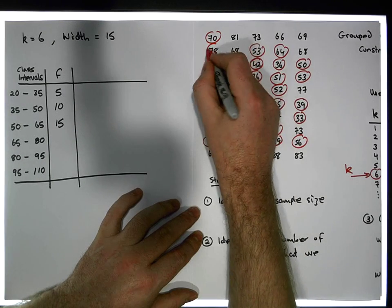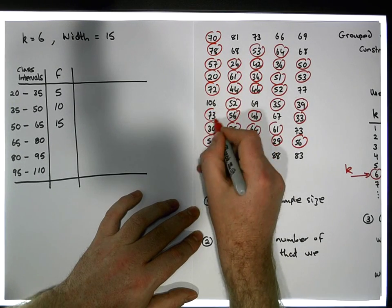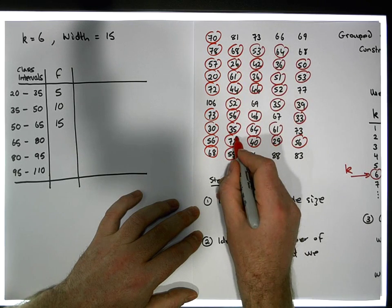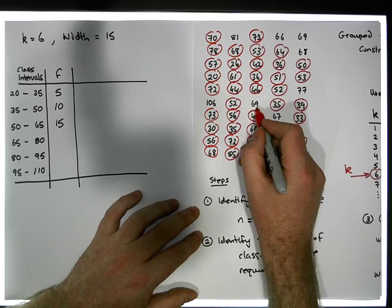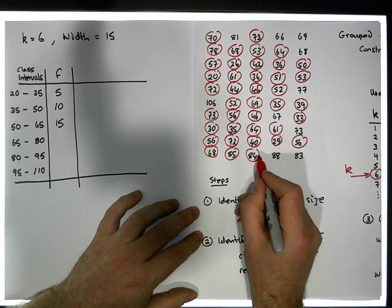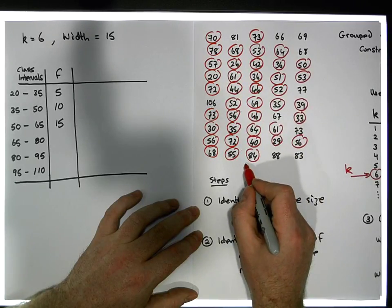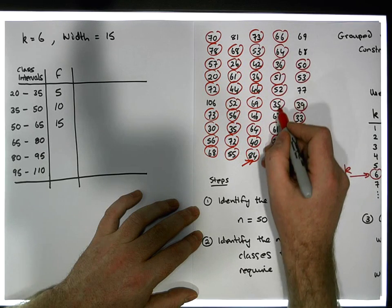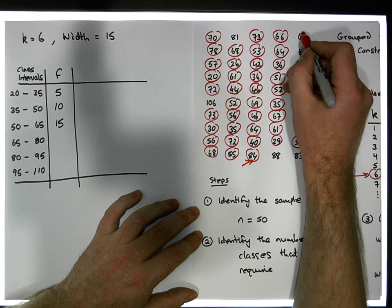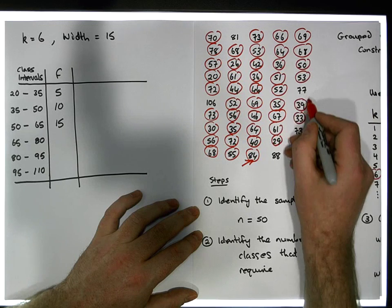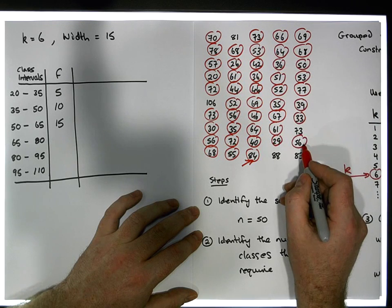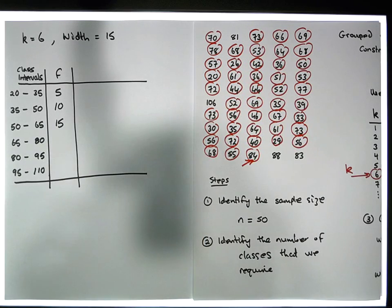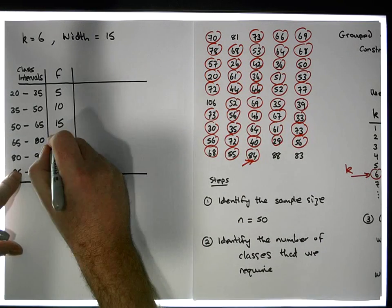How many of the remaining values are less than 80? There's one, two, three, four, five, six, seven, eight, nine, ten, eleven, twelve, thirteen, fourteen, fifteen — there are 15 values less than 80, so the frequency for this interval is 15.